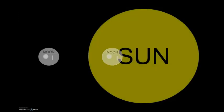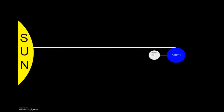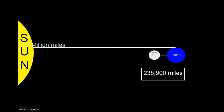In addition to the moon influencing the tides, the sun also influences the tides, but not as much as the moon. The reason for this is the sun is so much further away from the earth than the moon is. The sun is almost 100 million miles away from the earth, and the moon is only 239,000 miles away.